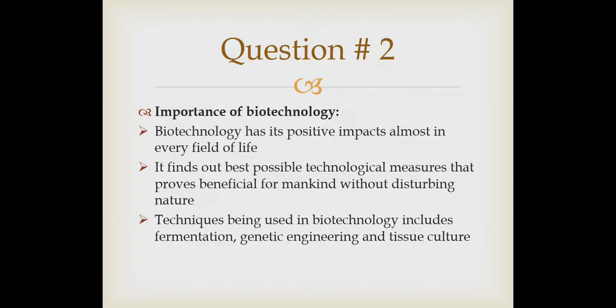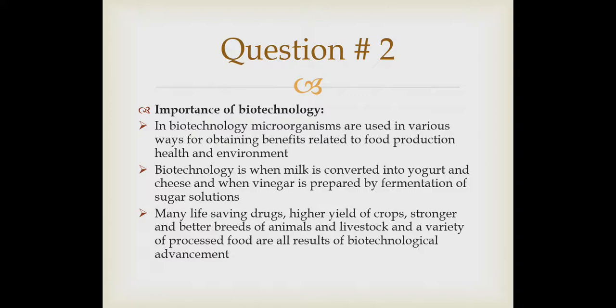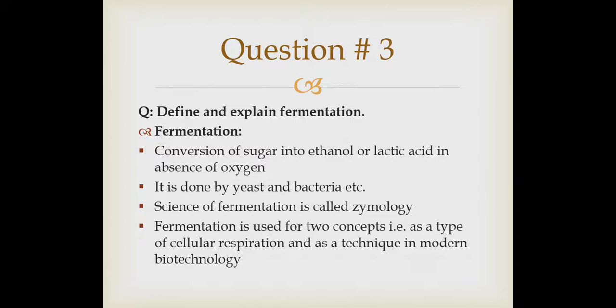Techniques used in biotechnology include fermentation, which is a simple form of biotechnology — yogurt, for example, is formed with the help of this technique. Then there is genetic engineering, by which we can modify genes of organisms, and tissue culture. Microorganisms are used in various ways for obtaining benefits related to food production, health, and environment. When milk is converted into yogurt, this is simply fermentation. When cheese is produced from milk, or when vinegar is prepared by fermentation of a sugar solution, this is also biotechnology. Many life-saving drugs, higher yield crops, stronger breeds of animals, and a variety of processed foods are all results of biotechnological advancement.